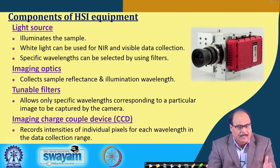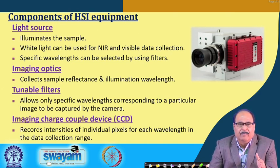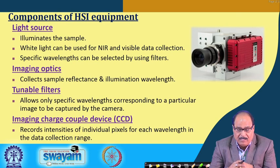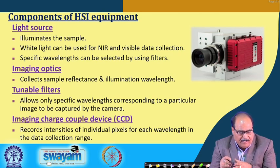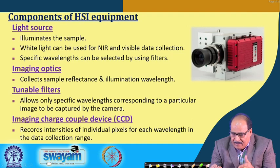The light source illuminates the sample. White light can be used for NIR and visible data collection, and a specific wavelength can be selected by using appropriate filters provided in the instrument. Imaging optics collect sample reflectance, and tunable filters allow only a specific wavelength corresponding to a particular image to be captured by the camera. Finally, the imaging charge-coupled device (CCD) records intensities of individual pixels for each wavelength in the data collection range.